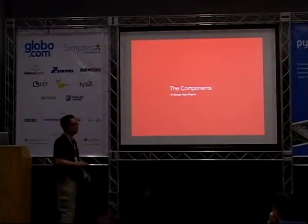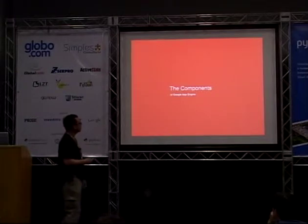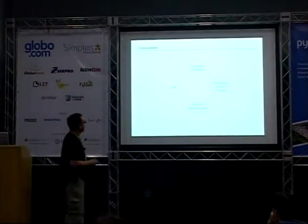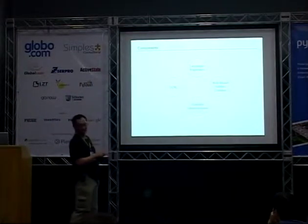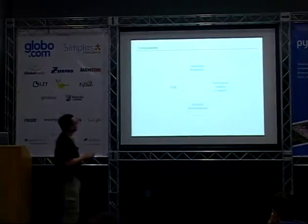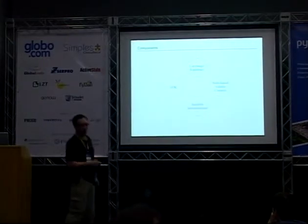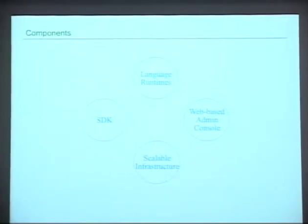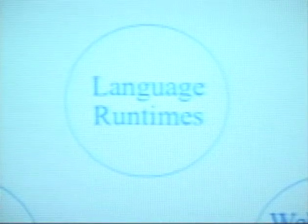The big pieces of App Engine are: an SDK, the programming languages, the administration console which is your control panel, and the infrastructure. Let's start with the one you have no control over — the infrastructure.